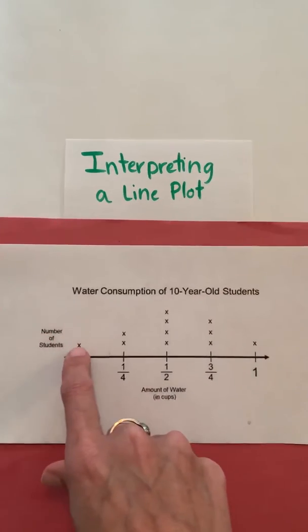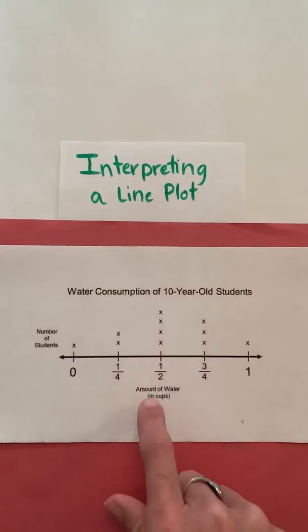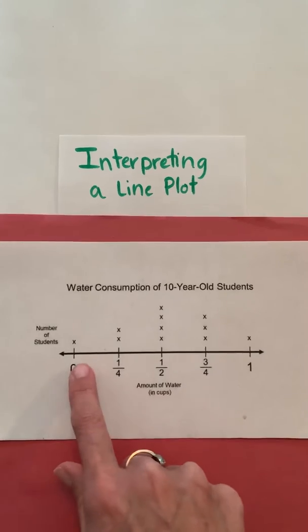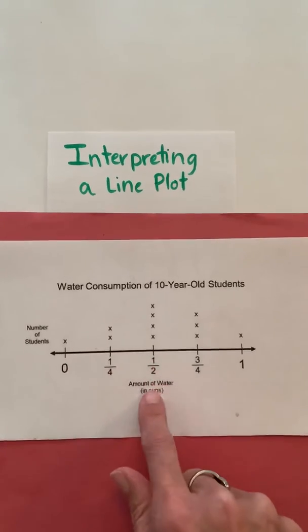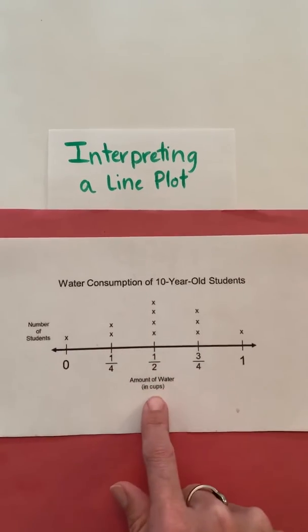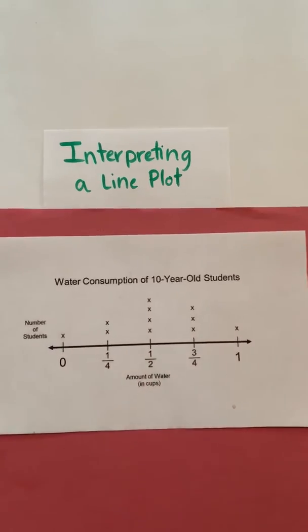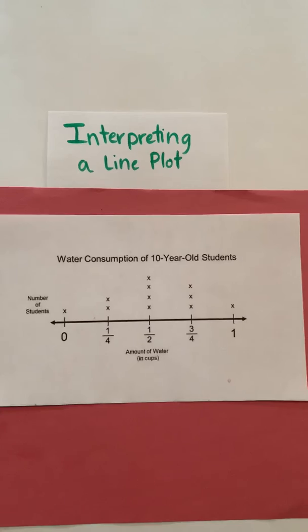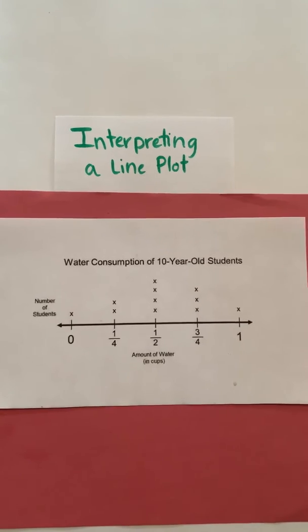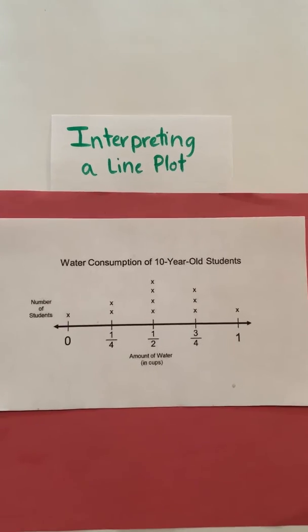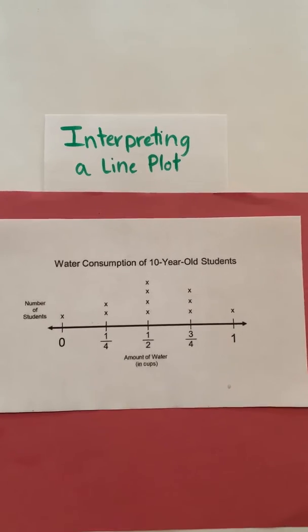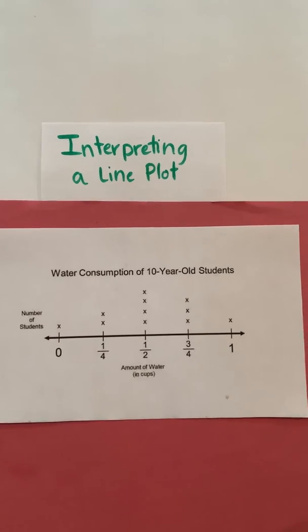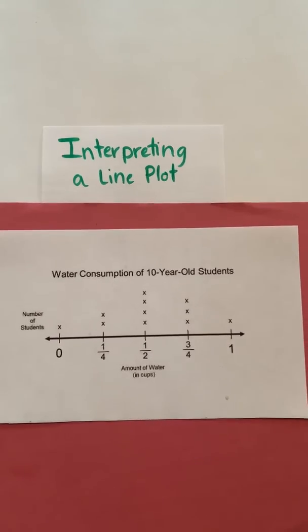The X's represent the number of students, and the numbers along the bottom are the amount of water in cups. Looking at this graph, I just have to be able to interpret it — to look at it and say, what is it telling me?